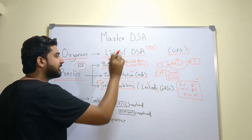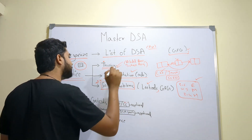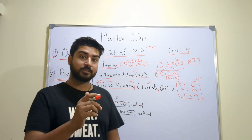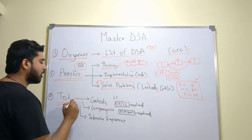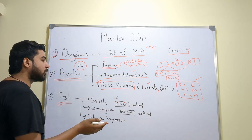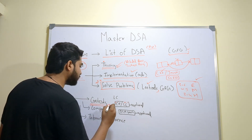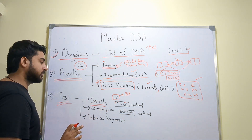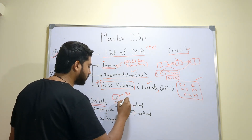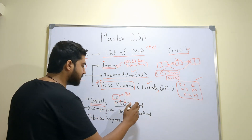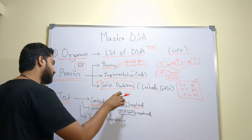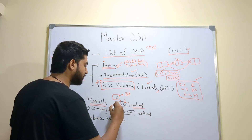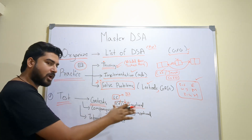After you've done this for every data structure and algorithm — learned theory, know the implementation, and solved a lot of problems — you'll feel confident and comfortable. Now you need to test your knowledge, which is the third step. Give contests on LeetCode and try to solve the first two to three problems. Apart from that, if you have time, go on Codeforces and CodeChef and solve problems there. This is optional, as competitive programming isn't always needed, but it will make you a better problem solver.